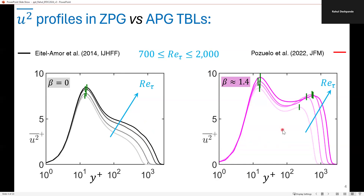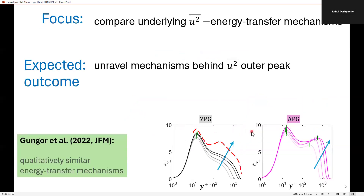We can note that in the case of the APG, there is a clear outer peak, and this outer peak strength increases purely based on Reynolds number. This is something that one would expect for a very high Reynolds number ZPG flow if an outer peak emerges. So, considering these similarities between the ZPG and APG boundary layers, the focus of the present study is to compare the underlying energy transfer mechanisms between the two boundary layers.